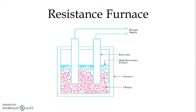In the figure we can see the direct type of resistance furnace. We have two electrodes which are connected to the electric supply, and the electrodes are directly in contact with the charge. So when we switch on the supply, current will pass through the electrodes and through the charge. The charge itself will pass the current, and that is why the name is given as direct resistance furnace.